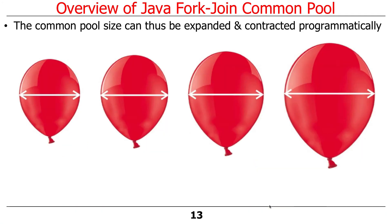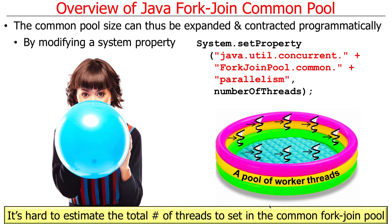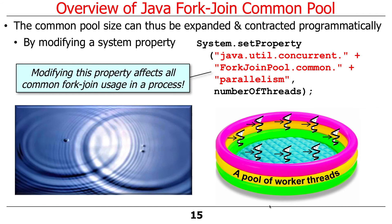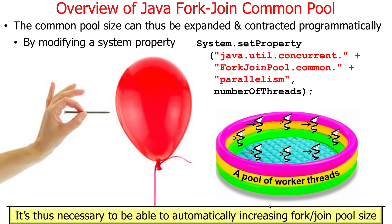For that reason, you can expand and contract the size of the pool. You can do it by modifying a property to give the number of threads, but that's hard to estimate because you don't always know in advance what the right number is unless you have a very static program. Moreover, if you make this change, it'll affect all other parts of your program in a process that are trying to use the common fork join pool.